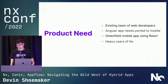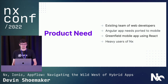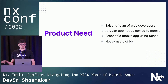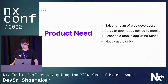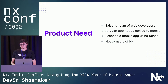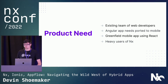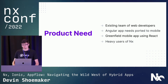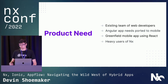So let's say you've got an existing team of web developers. You've got an Angular app that already exists, and you have a need for it to be ported to mobile. You've also got a Greenfield mobile app that's coming down the pipeline, and your team has been considering using React for it. And you guys are also heavy users of NX, so you're totally bought into building in monorepos, sharing your code, and that whole entire ecosystem.